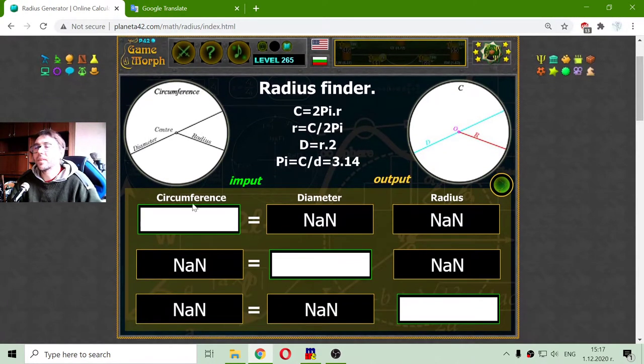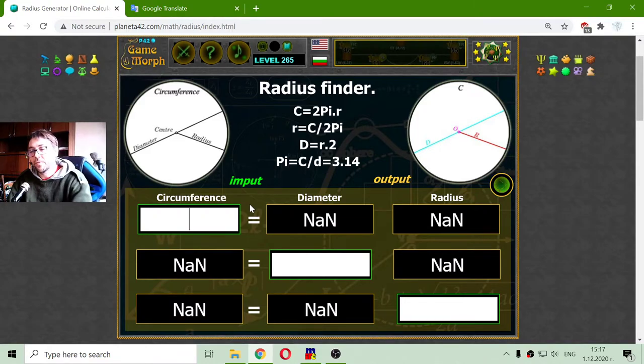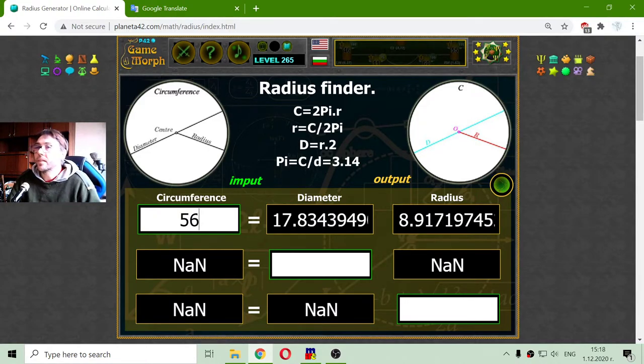Now let me see how to find the radius if I have the circumference. If I have a circumference of 56, for example, now I see the diameter is 17.83 and the radius is 8.91.